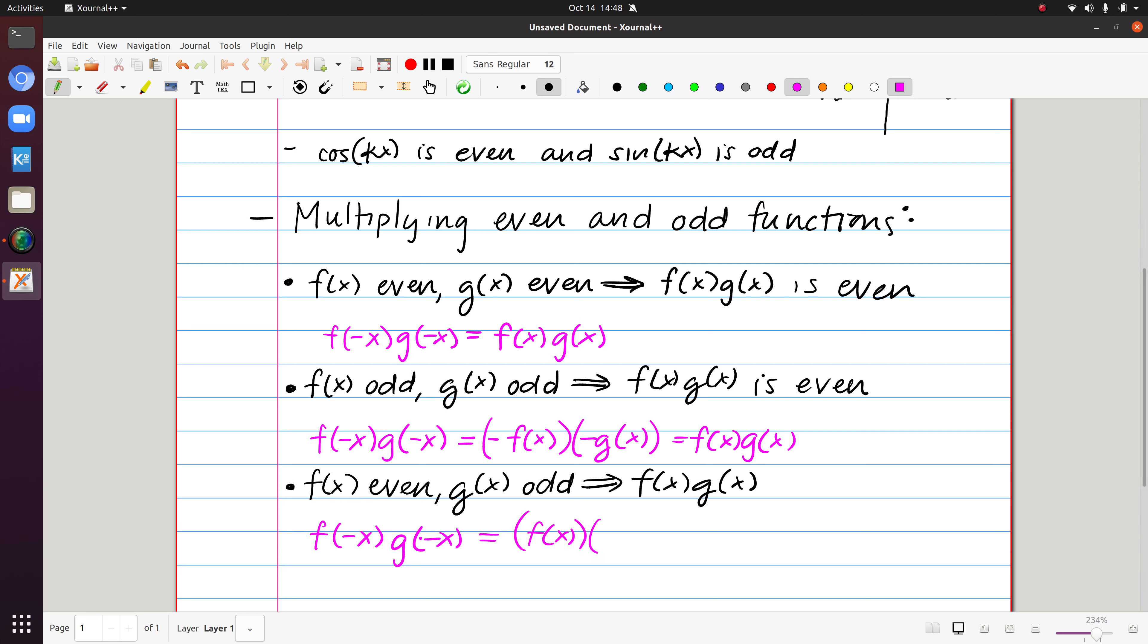g of x is odd, so g of minus x is negative g of x. So we get negative f of x times g of x. That's what an odd function satisfies. So it turns out that we get an odd function when we multiply an even and an odd function together.